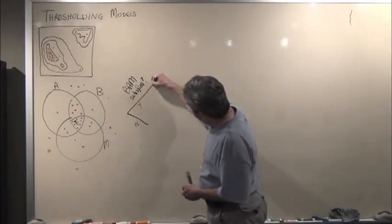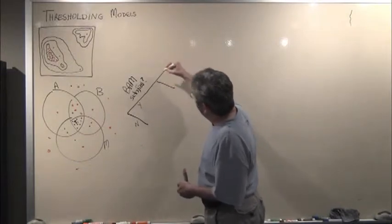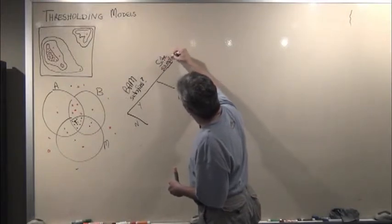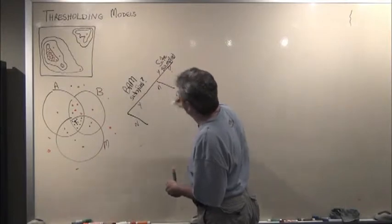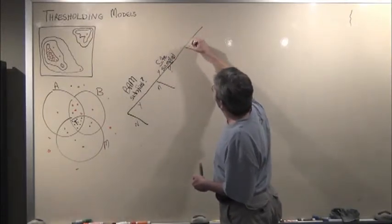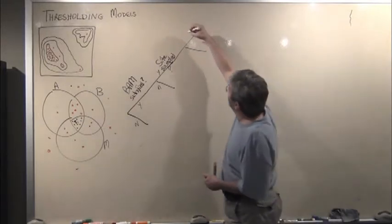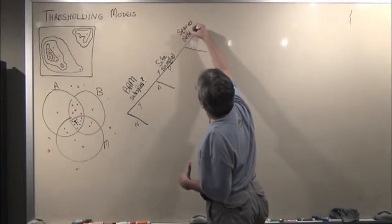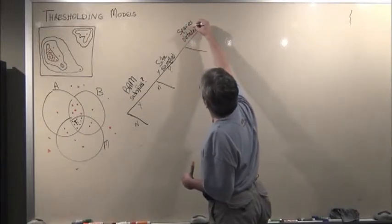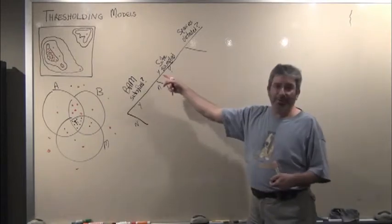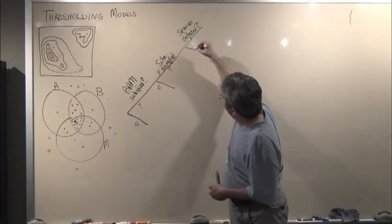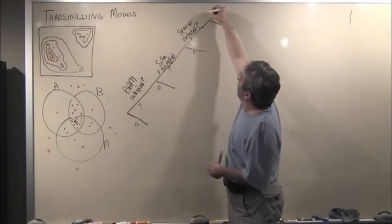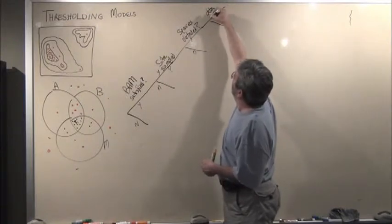A second set of decisions can be whether the site was ever sampled. Again, yes or no. A third decision can be whether the species was detected. Some species are very hard to detect. So even if the site was sampled, researchers may have detected it or not.